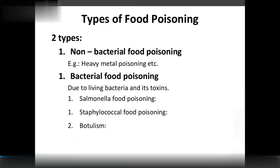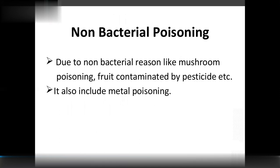Non-bacterial food poisoning occurs due to heavy metals from chemical industries contaminating water, and also includes mushroom poisoning and food contaminated by pesticides. Bacterial food poisoning is caused by bacteria releasing toxins into food. Examples include Salmonella, Staphylococcal, and Botulism.